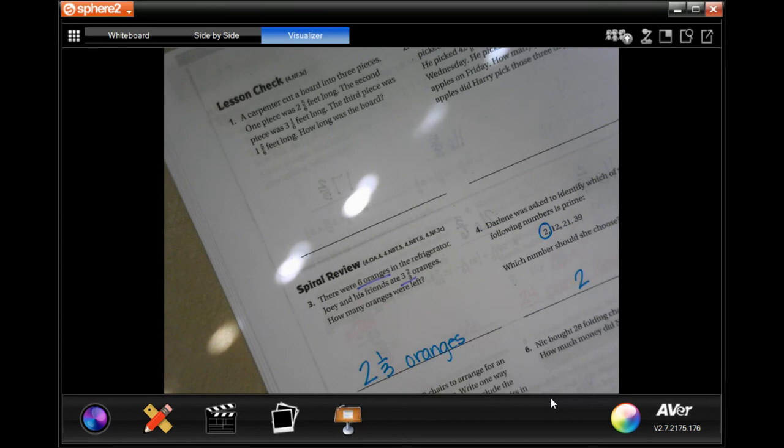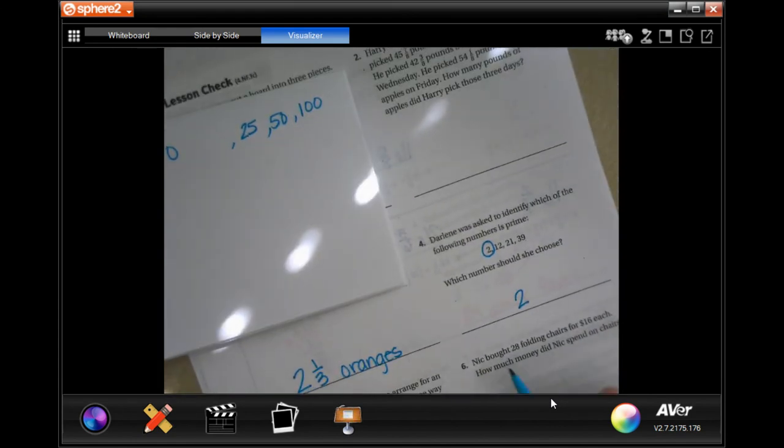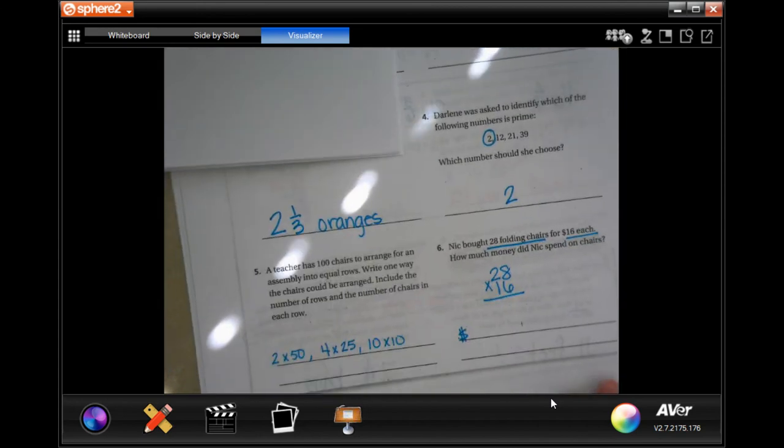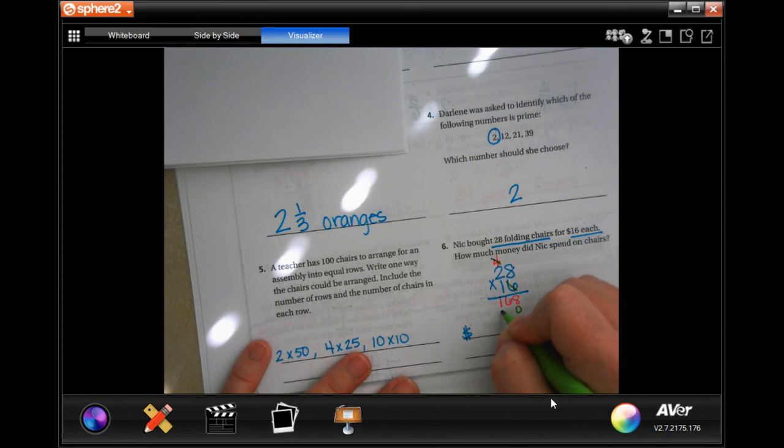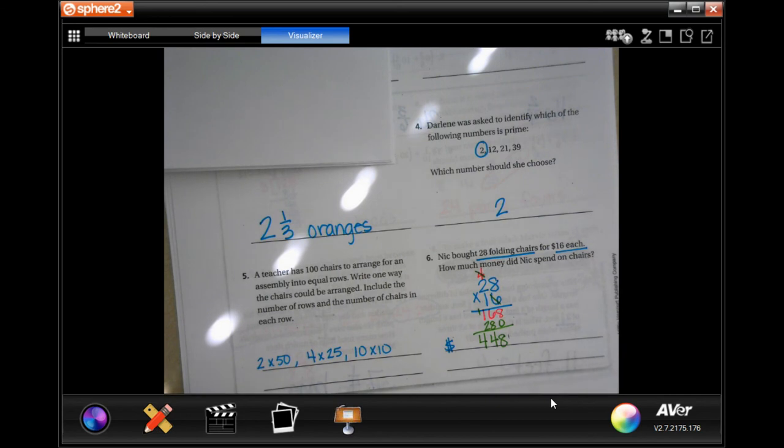Nick bought 28 folding chairs for $16 each. How much money did he spend? Whatever your answer is, it's going to have a dollar sign in front of it. Six times 8 is 48, carry that four. Six times 2 is 12, plus 4 is 16. We're going to go through and do the back, so 1 times 28 is 28. We have 8, 14, carry that 1. 1 plus 1 is 2, plus 2 is 4. Four hundred and forty-eight dollars.